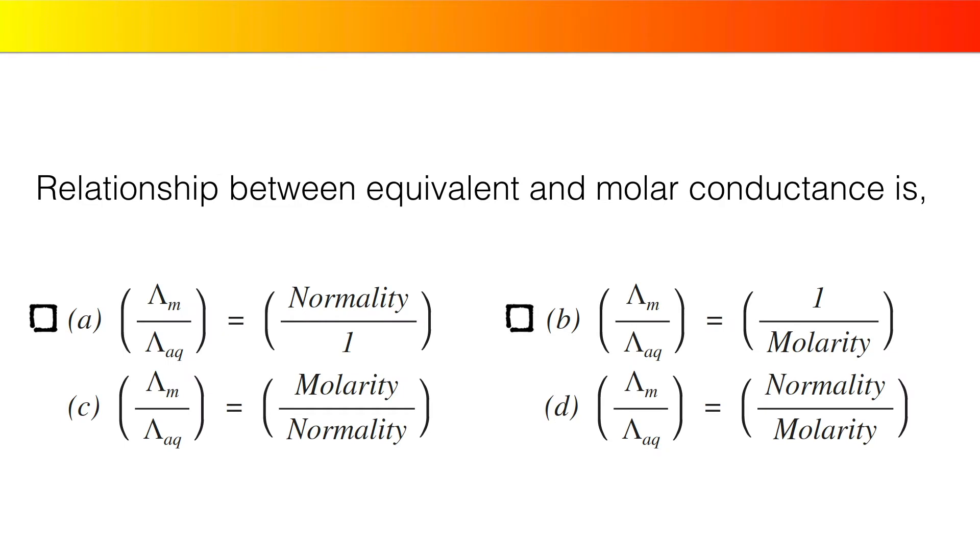Relationship between equivalent and molar conductance is lambda m divided by lambda aq equals normality divided by 1, lambda m divided by lambda aq equals 1 divided by molarity, lambda m divided by lambda aq equals molarity divided by normality, lambda m divided by lambda aq equals normality divided by molarity.